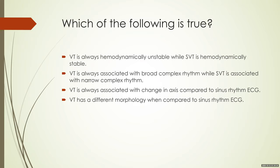Here is another question: which of the following is true? One — VT is always hemodynamically unstable while SVT is stable. Two — VT always has a broad complex while SVT has a narrow complex. Three — VT is always associated with axis change compared to sinus rhythm. Four — VT has a different morphology compared to sinus rhythm. Options three and four require previous ECGs. We shall discuss the answer later in the presentation.